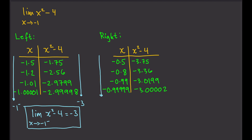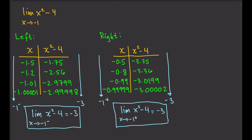As x approaches negative 1 from the right, f(x) approaches negative 3. Therefore, the limit of x squared minus 4 as x approaches negative 1 from the right equals negative 3. Since the left-hand limit and the right-hand limit are equal, we say that the limit of x squared minus 4 as x approaches negative 1 is equal to negative 3.